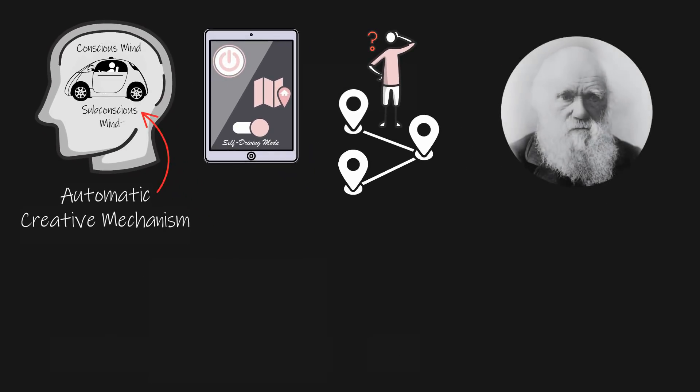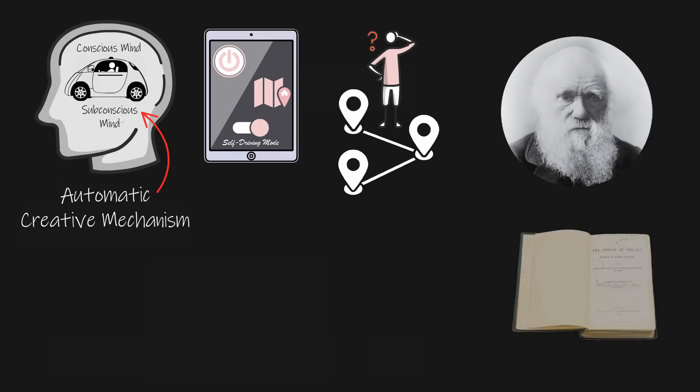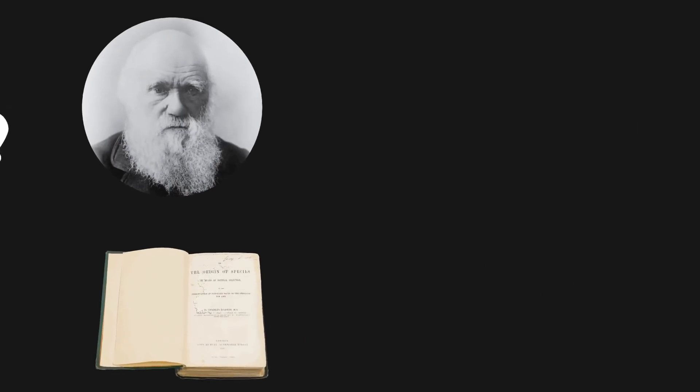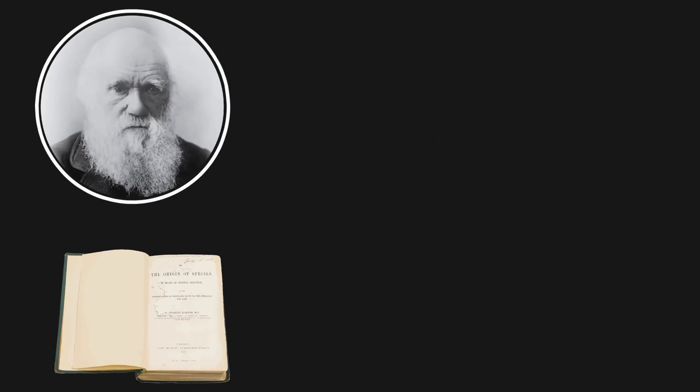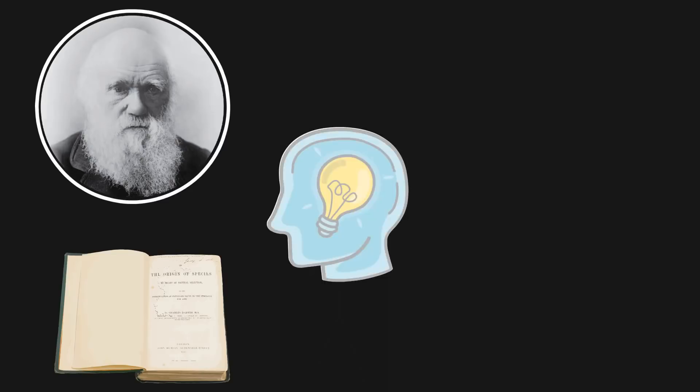Famous creatives have used their automatic creative mechanism to accomplish big goals. Charles Darwin, after months of trying to organize his book and failing, stopped consciously thinking about his problem and delivered his goal to his subconscious. Days later, he was hit with an intuitive flash and the idea he needed to complete the origin of species came to him.